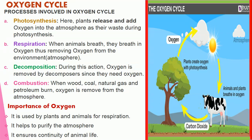Oxygen circle: Processes involved include: A. Photosynthesis — plants release and add oxygen into the atmosphere as a waste product during photosynthesis. B. Respiration — when animals breathe, they breathe in oxygen, thus removing oxygen from the atmosphere. C. Decomposition — during this process, oxygen is removed by decomposers such as fungi and bacteria, since they themselves need the oxygen.